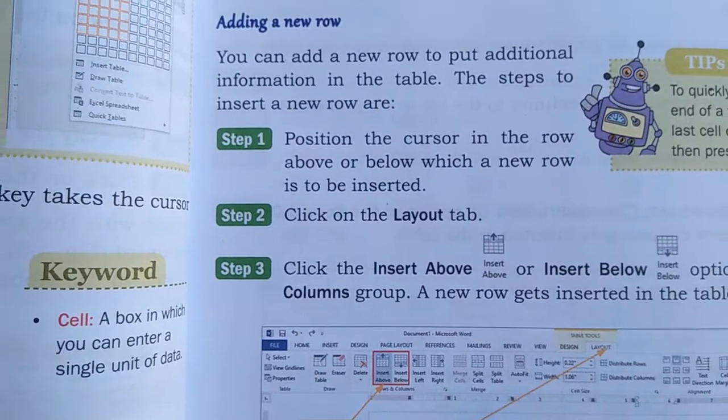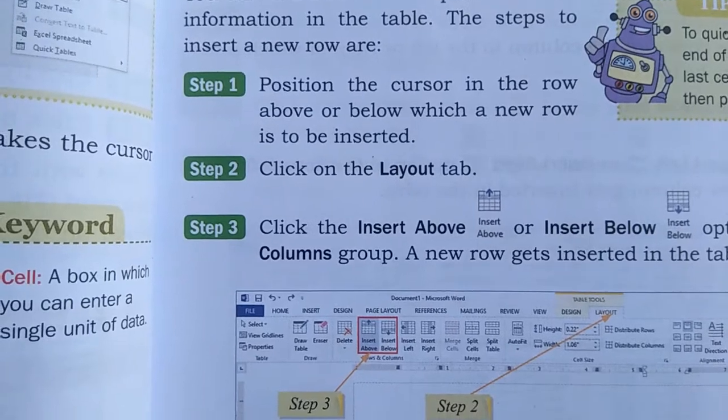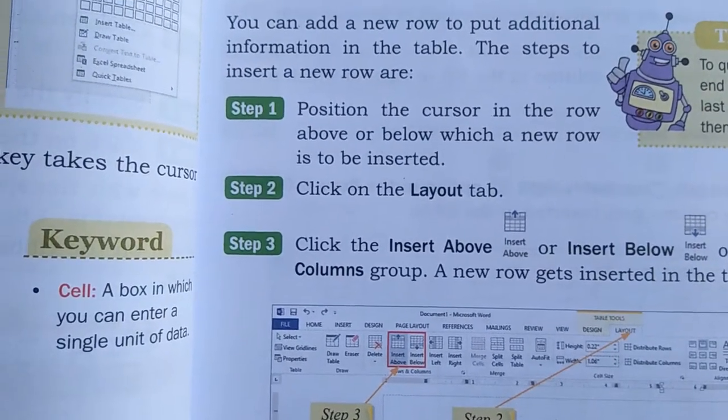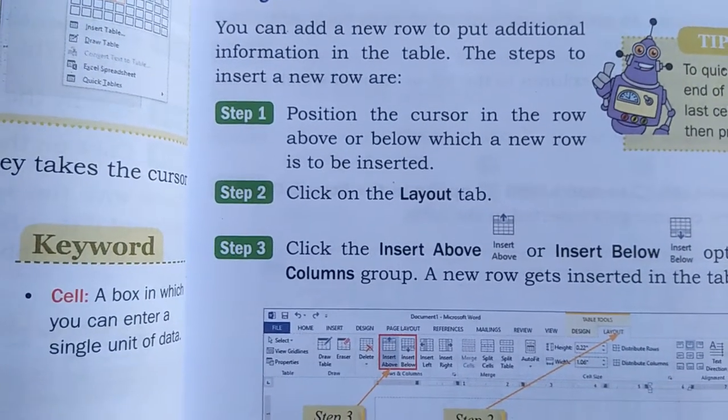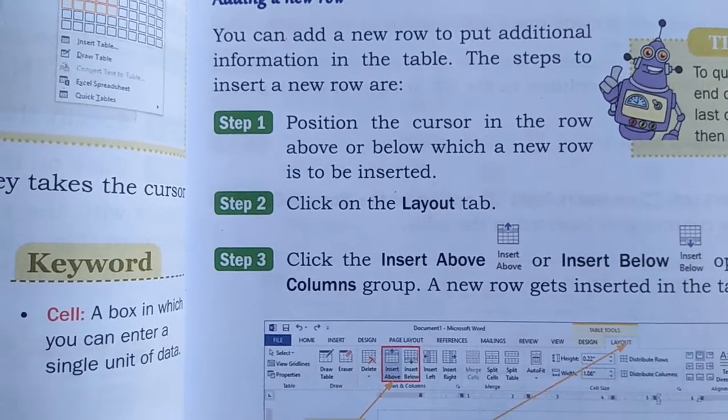If we have to add a column, then we have left or right. If we have to add a row, then we have row above or row below.